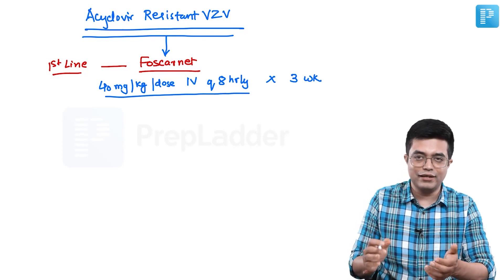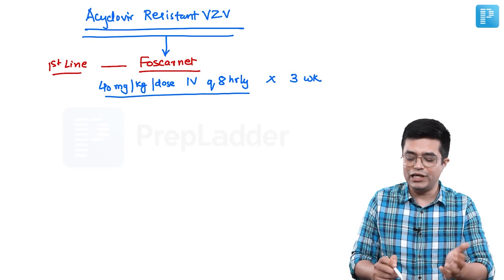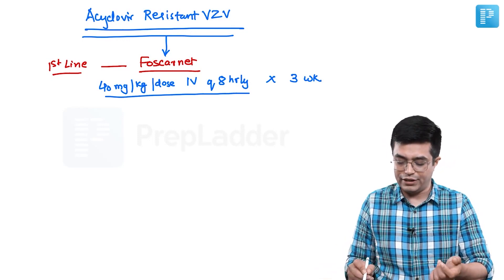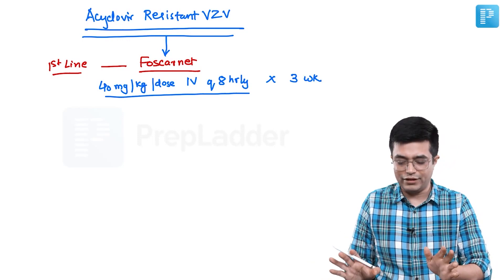Nelson mentions it slightly differently. Nelson says it is 120 mg per kg per day in 3 divided doses every 8 hourly. So it means the same thing basically.